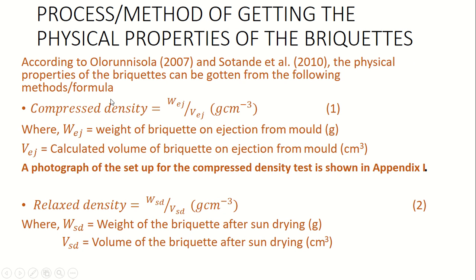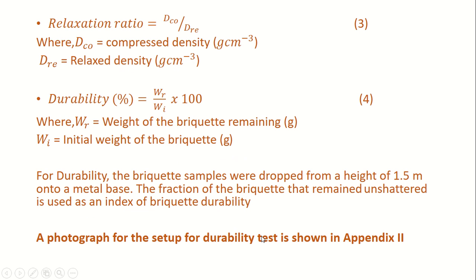Immediately after ejection from the mold, we get the compressed density, which is the weight over the volume. Relaxed density is obtained as the weight of the briquette after sun-drying divided by the volume of the briquette after sun-drying. So, we get the relaxed density after sun-drying the briquettes. The relaxation ratio is the ratio of the compressed density to the relaxed density.